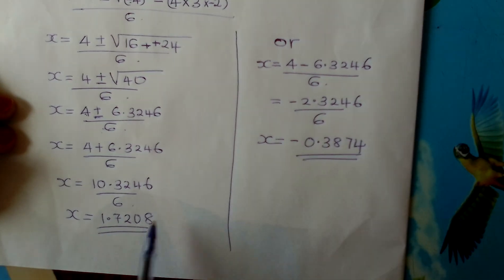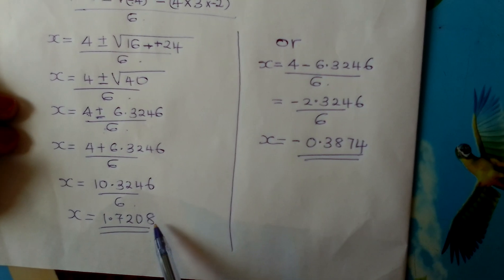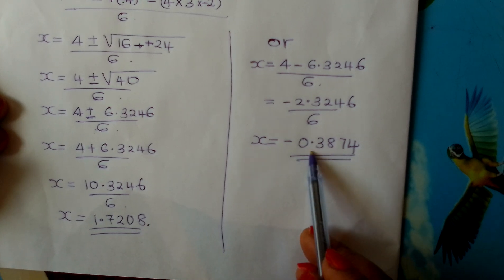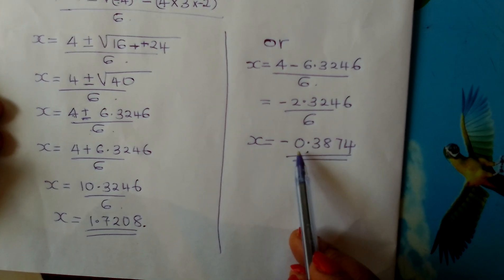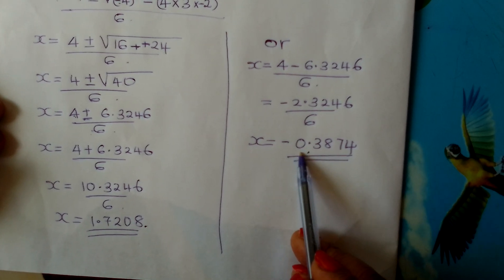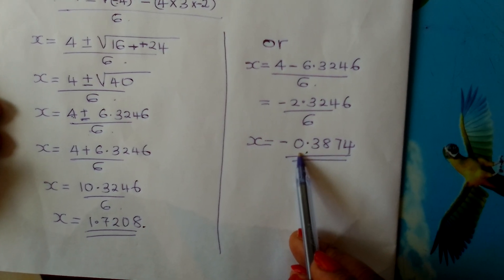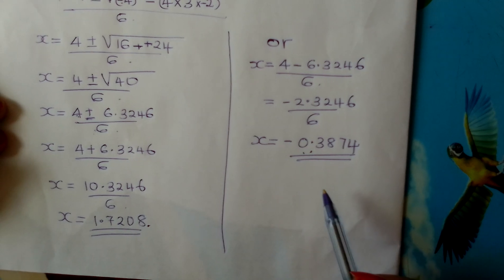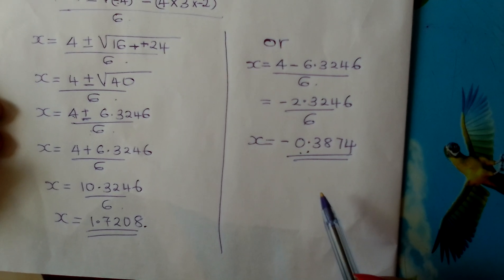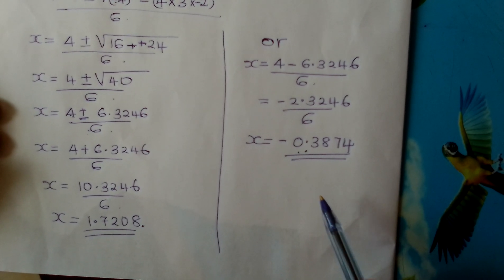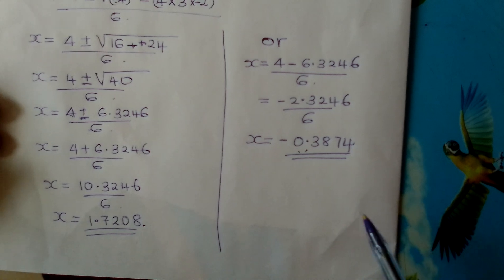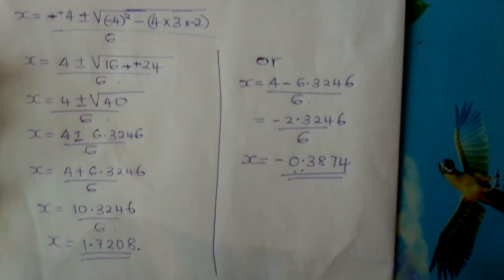So your x in this case is either approximately 1.7208 or approximately negative 0.3874. Go and practice on how to solve quadratic equations using the quadratic formula. All the best. Bye-bye.